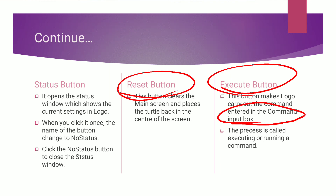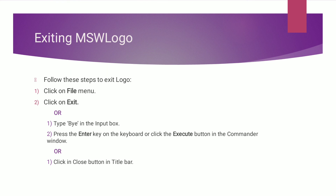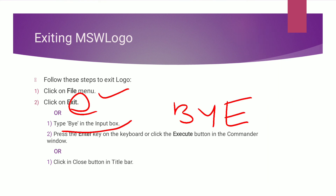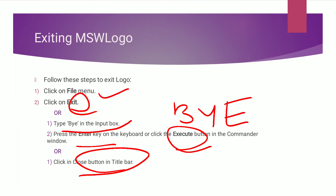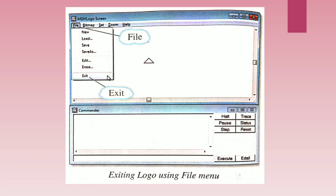After executing your commands, when you want to close the MSW Logo screen, follow these steps: go to the File menu and click on Exit. If you are not able to do that, type 'bye' in your command input box and press Enter or click the Execute button. You can also directly click the Close button on the title bar. These are the three ways to close your MSW Logo screen.